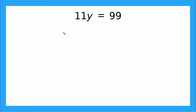Here we have an equation that says 11y equals 99, and our goal is to solve for the variable y. Now, what does 11y mean? That's right — it means multiplication. So 11y is the same as saying 11 times y. So if I need to get the y alone on one side of the equation, I need to undo this times 11.